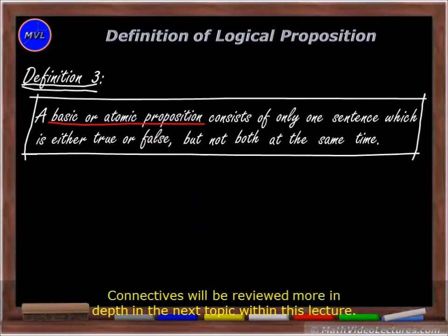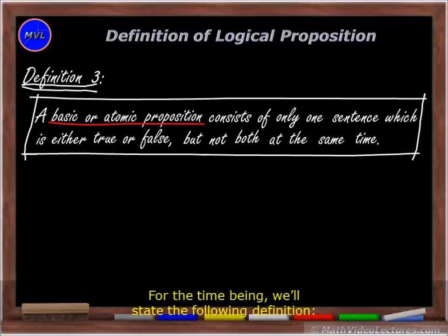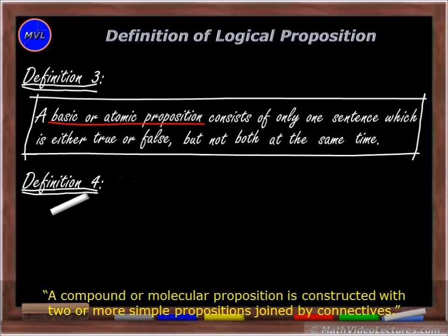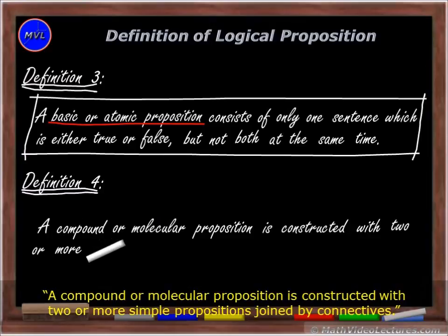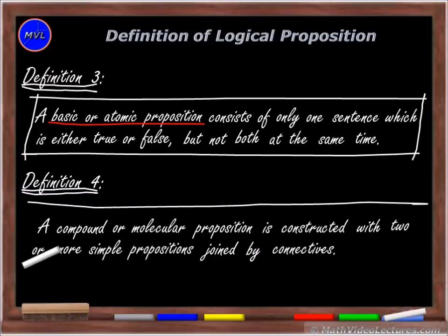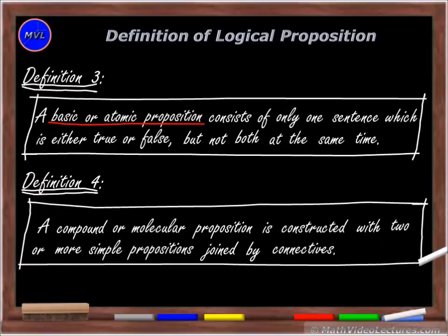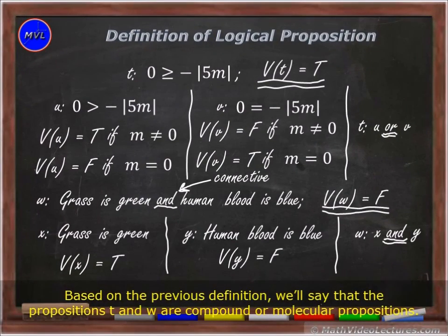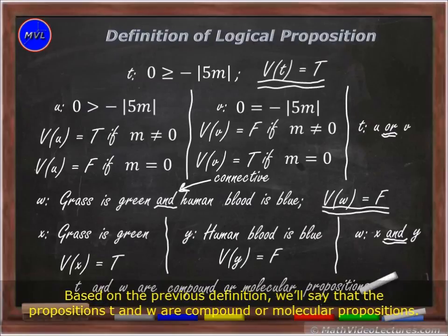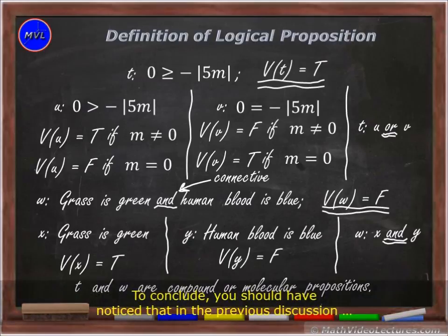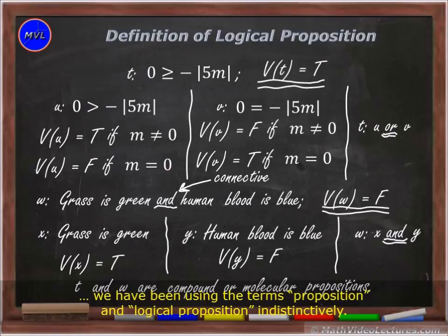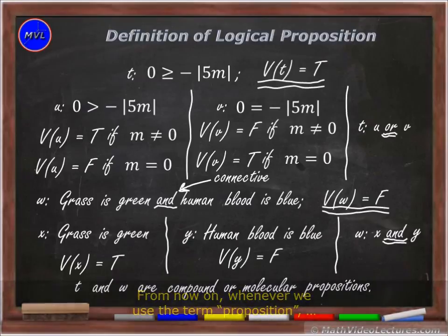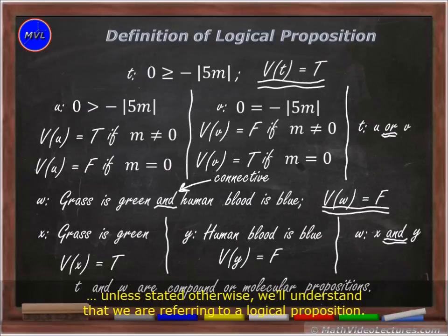Connectives will be reviewed more in depth in the next topic within this lecture. For the time being, we'll state the following definition. A compound or molecular proposition is constructed with two or more simple propositions joined by connectives. Based on the previous definition, we'll say that the propositions t and W are compound or molecular propositions. To conclude, you should have noticed that in the previous discussion we have been using the terms 'proposition' and 'logical proposition' interchangeably. From now on, whenever we use the term 'proposition,' unless stated otherwise, we'll understand that we are referring to a logical proposition.